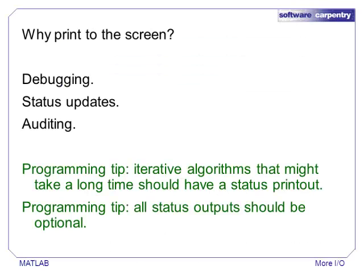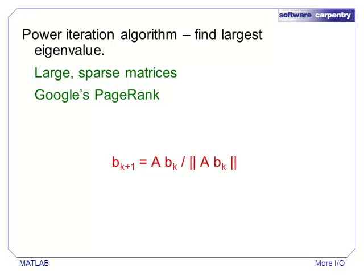Before we start printing to the screen, it is important to figure out what kind of output is appropriate to print. One common practice is to print intermediate status messages in functions that run for a long time. A good status message can help the user abort a program if it is not performing correctly. Functions that iterate an unknown number of times often have status messages.